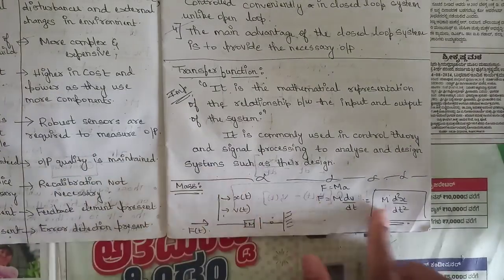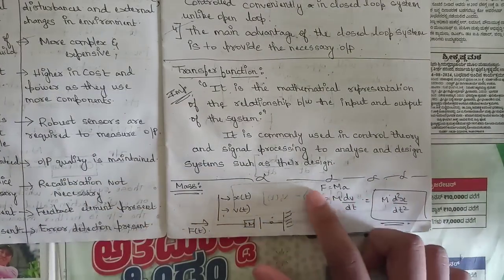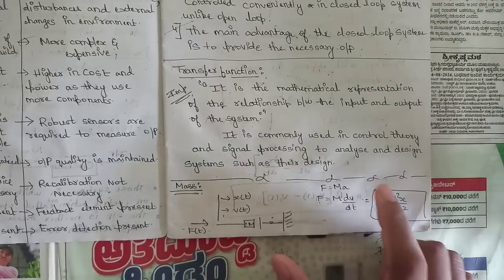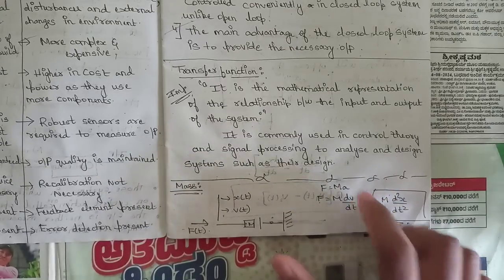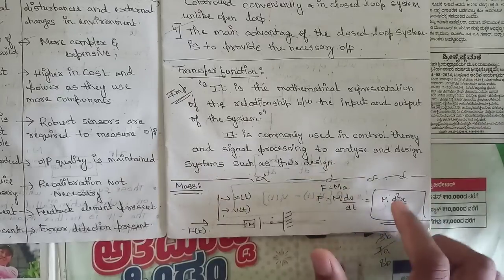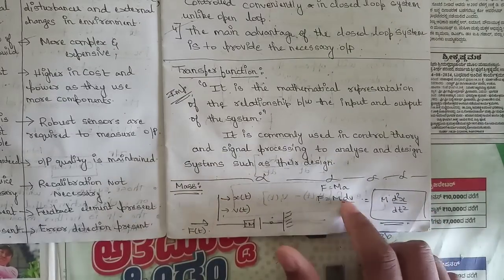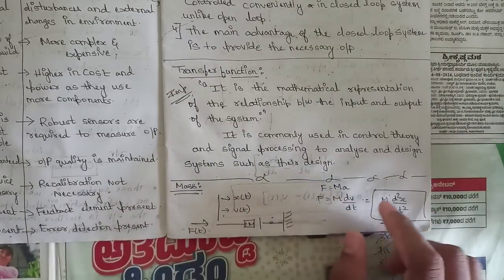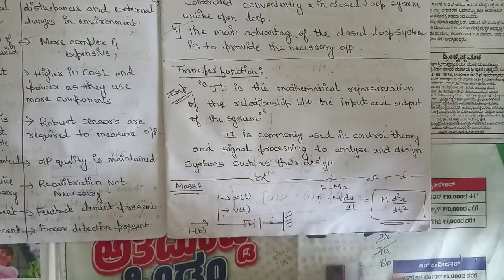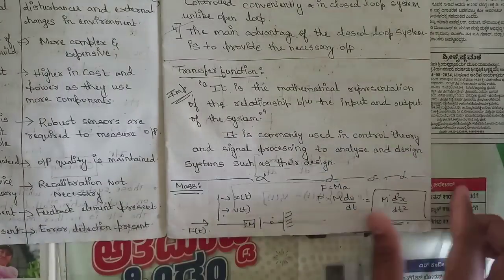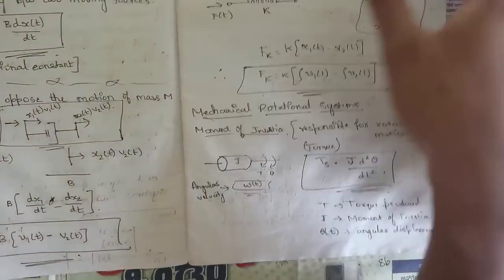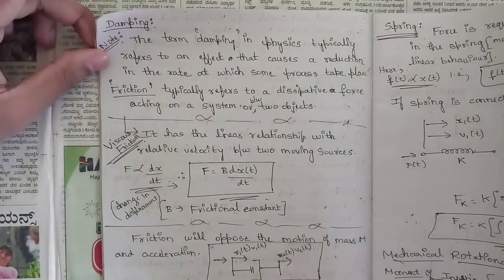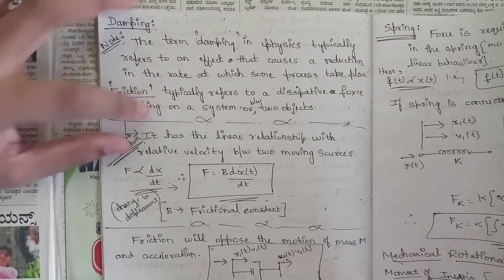We discussed the mechanical component of mass: force equals mass times acceleration. Since acceleration equals dv/dt, and v = dx/dt, this is represented as m times d²x/dt². This is the equation for mass.